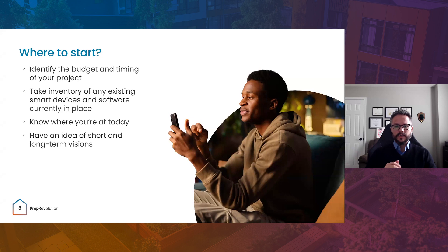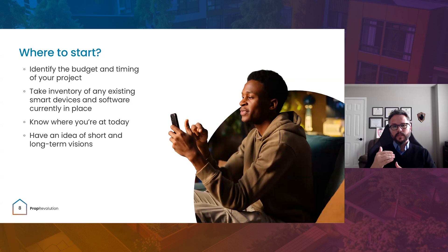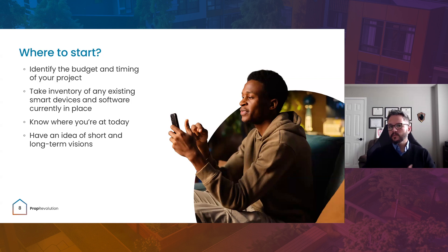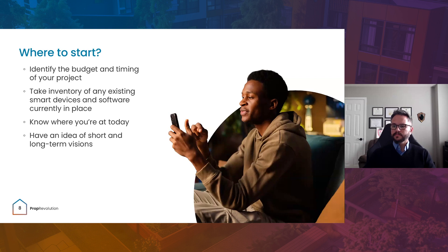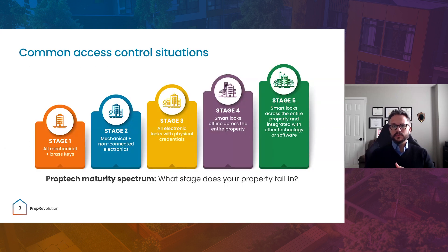The very first step will be looking at your own building, whether this is a new construction project you're working on with an architect or a renovation project you're looking at upgrading. The question is: what is my timeframe and my budget, and what do I plan on doing in both the short term and the long term? Taking inventory — do I already have any smart locks on site? Am I still working with brass keys, or am I starting from step one? Are you looking to build and flip this project, or is this a long-term investment that you plan on holding?